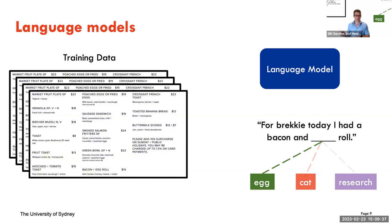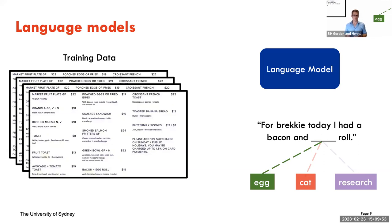In Australia, out of the three words egg, cat, or research, the most likely word to fill in that sentence would be 'egg.' Bacon and egg roll is a pretty popular breakfast item. Bacon and cat rolls, bacon and research rolls are much less common, so they'd be much less likely responses to that prompt.